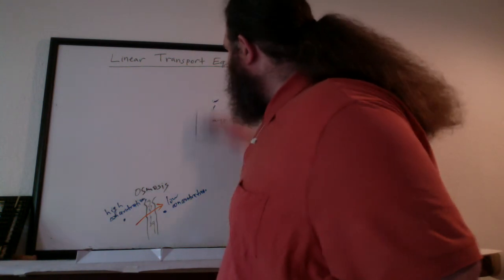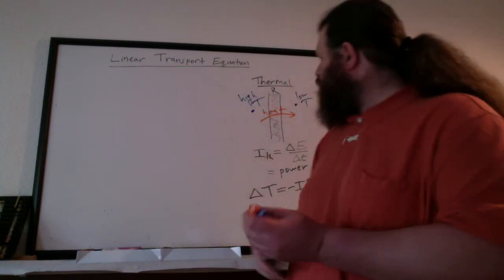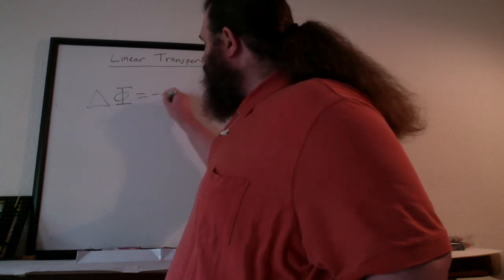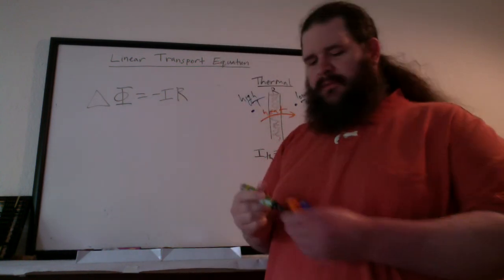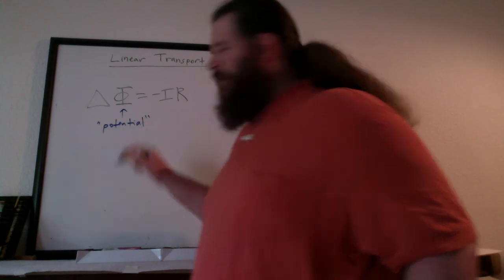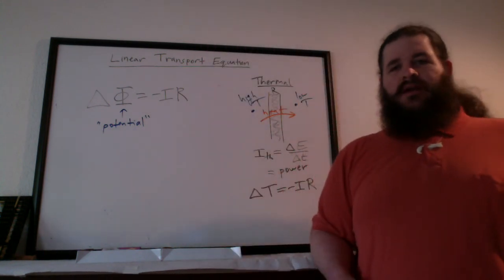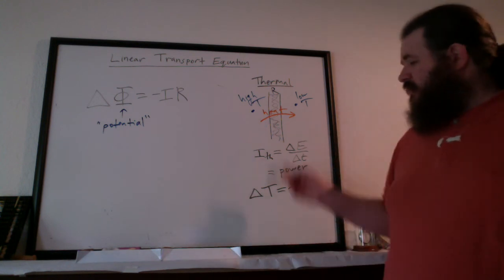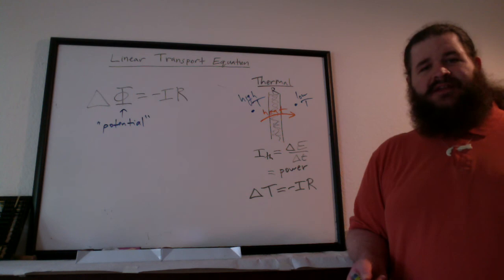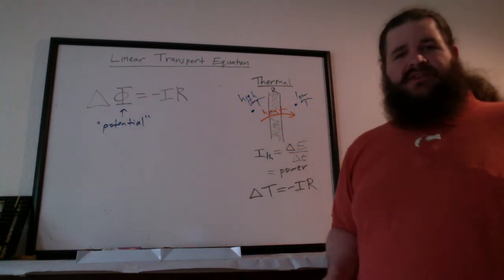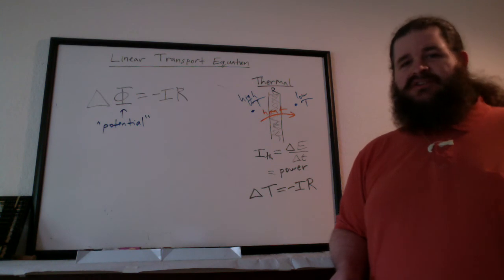Since all of these examples and more follow the same general structure of equation — just different meanings of the variables from situation to situation — the idea of the linear transport equation is we can set up one big equation that describes all of these cases. They all look like delta something equals negative IR. So in general, we write that as delta phi equals negative IR, where phi represents what we call the potential. The potential in all these cases is just the difference that's pushing current through the barrier — pressure for fluid flow, voltage for electrical, temperature for thermal, concentration for osmotic, and so on. It's always the same structure.